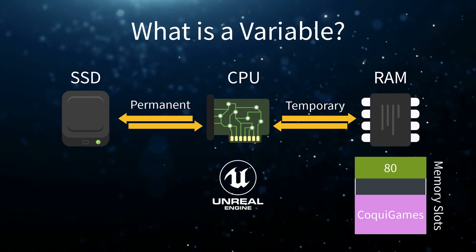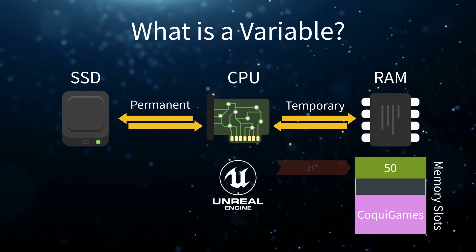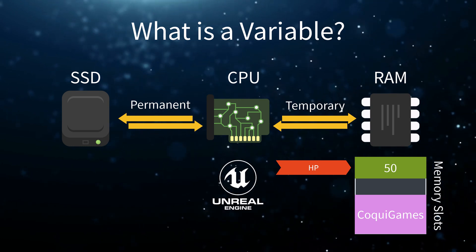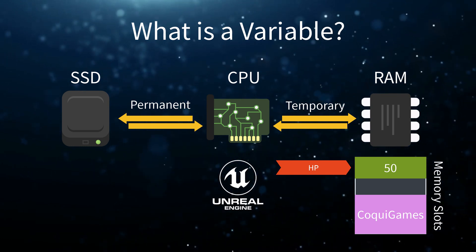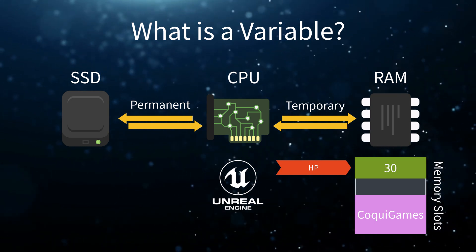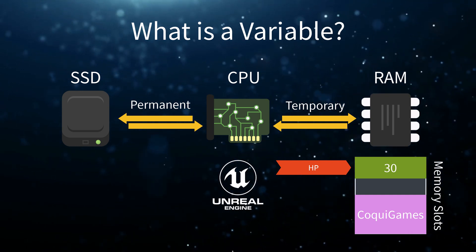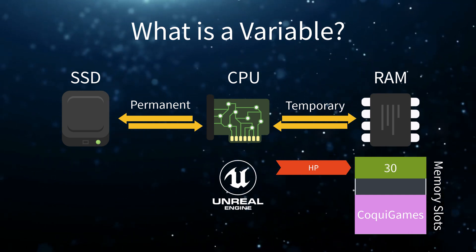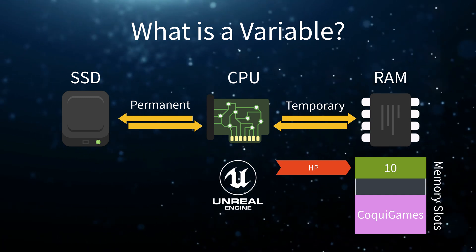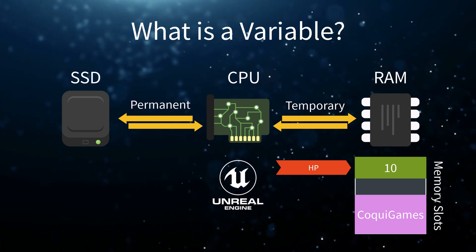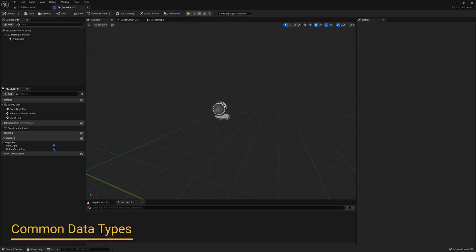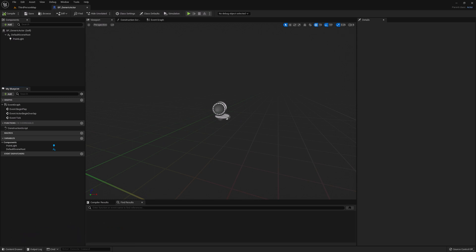A common example is a character's health value or HP. This can be represented by a number, so in this case we can create a number variable called health that will hold our character's HP during gameplay. Now that we know what a variable is, let's take a look at the most common variables or data types available in Unreal Engine.